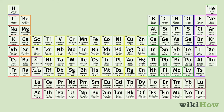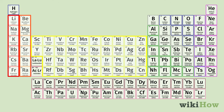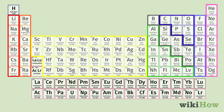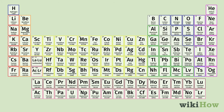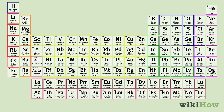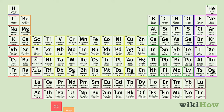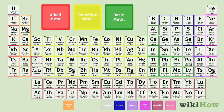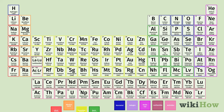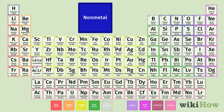The elements are also organized into groups or families that share similar physical and chemical properties. Each column in the periodic table, going from top to bottom, represents one of these groups. Additionally, related elements are usually color-coded to indicate whether they are metals, semi-metals, or non-metals.